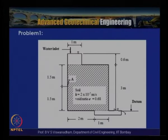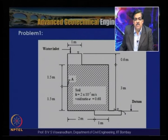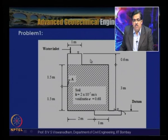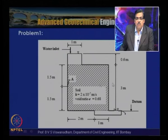The Problem 1 setup has soil with k = 2×10⁻⁷ m/s and void ratio e = 0.68. The horizontal distance is 3 m, the height is 3 m, and the width is 1 m. Point A is at the midpoint of the 3 m height. The datum is shown at the downstream water level, and the water height above this level is 0.6 m, making the total head difference 3 + 0.6 = 3.6 m.